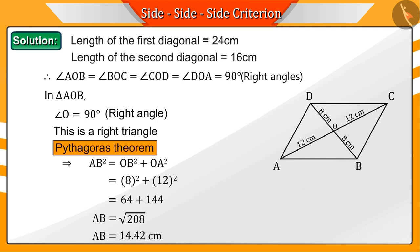Hence, for the rhombus, the lengths of all sides—AB, BC, CD, and DA—are 14.42 cm.